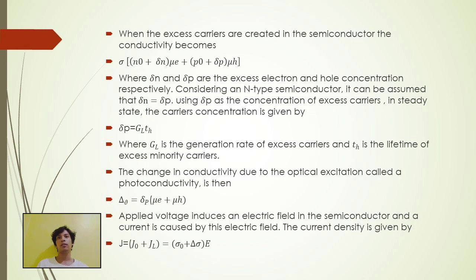Considering an n-type semiconductor, it can be assumed that delta n equals delta p using delta p as the concentration of excess carrier in steady state. The carrier's concentration is given by delta p equals gl times tau_h. Where gl is the generation rate of excess carrier, and tau_h is the lifetime of excess minority carrier. The change in conductivity due to the optical excitation called photoconductivity is then that formula. Applied voltage induces an electric field in the semiconductor, and the current is caused by the electric field. The current density is given by that formula.